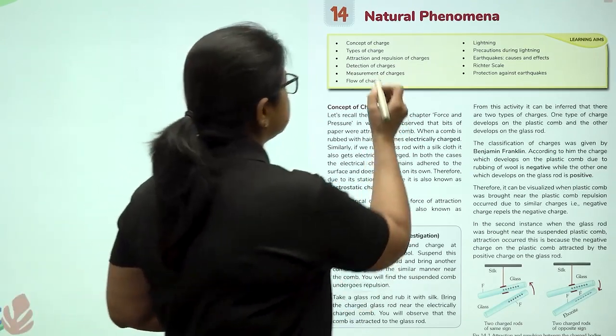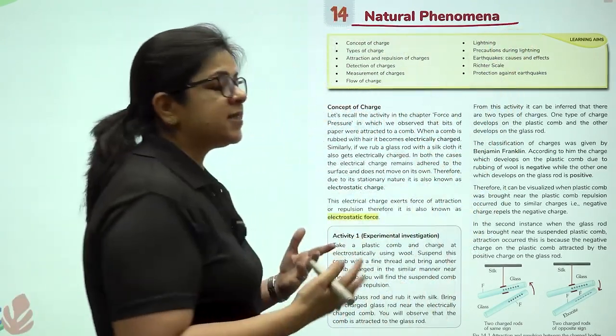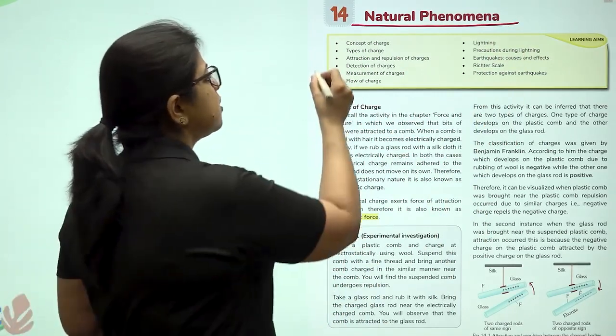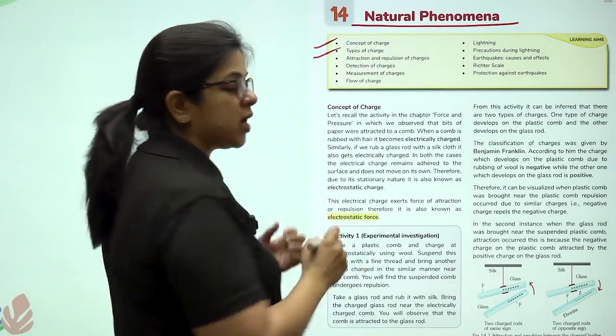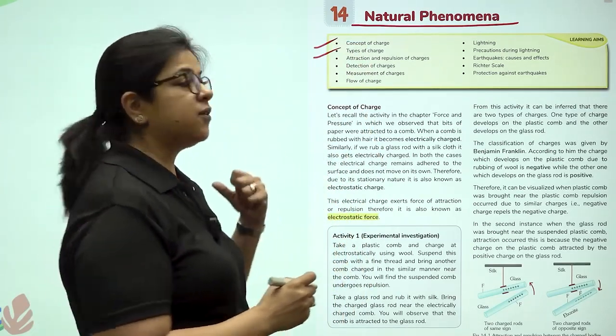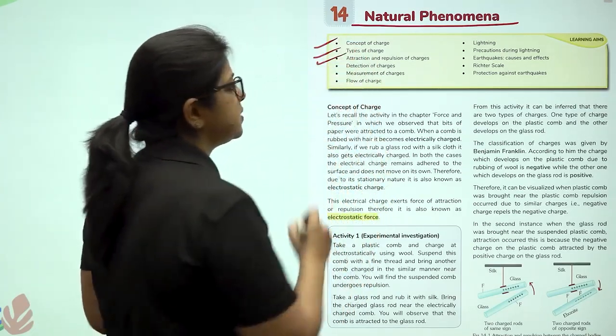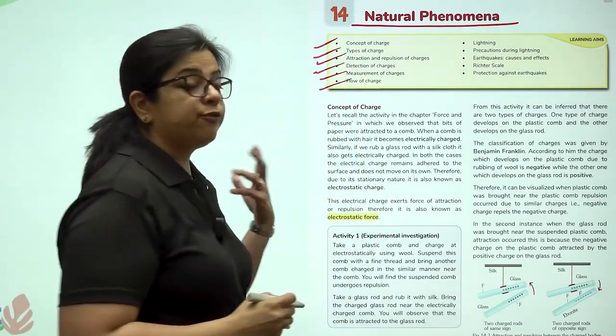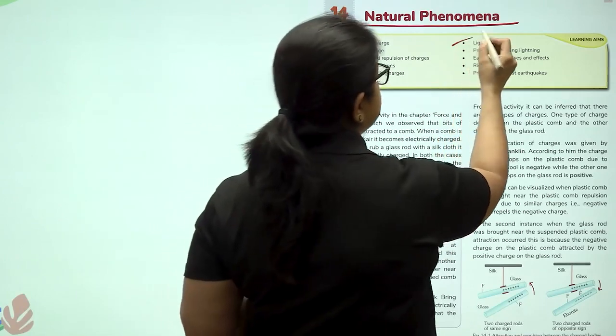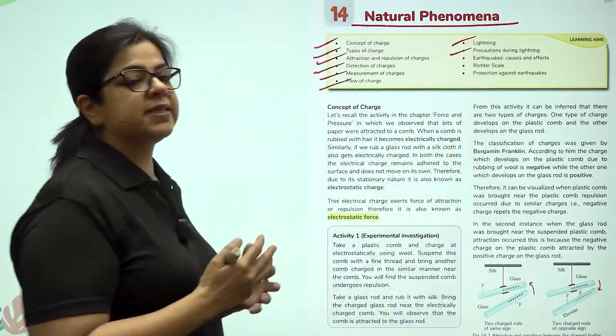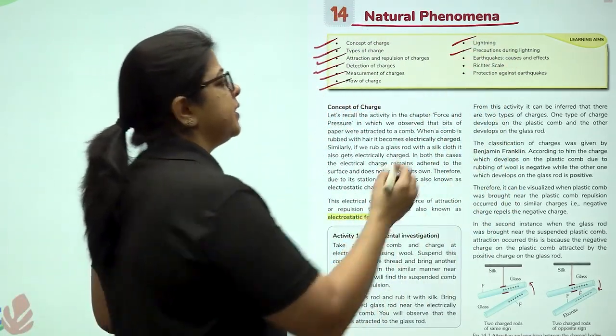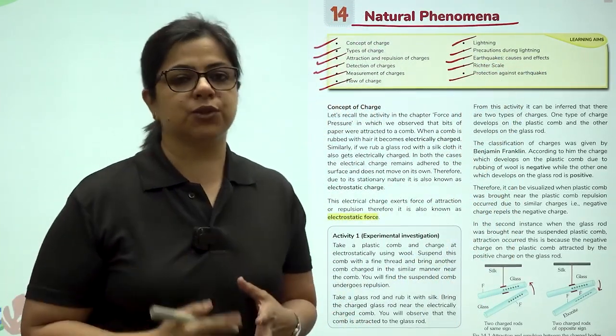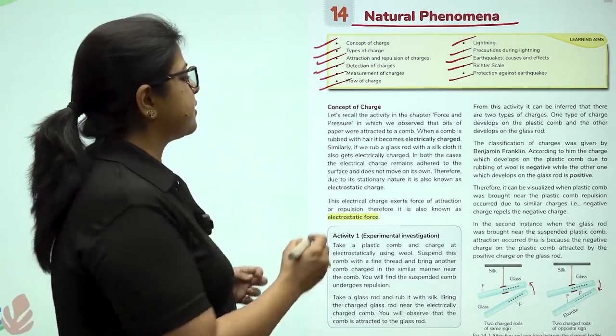These are the things that happen in nature and they are not in human control. We are going to talk about the concept and types of charges, the attraction and repulsion of charges, how the charges are detected and measured, how they flow, what is lightning, what are the precautions that should be taken during lightning, the causes and effect of earthquakes, Richter scale, and protection against earthquakes.